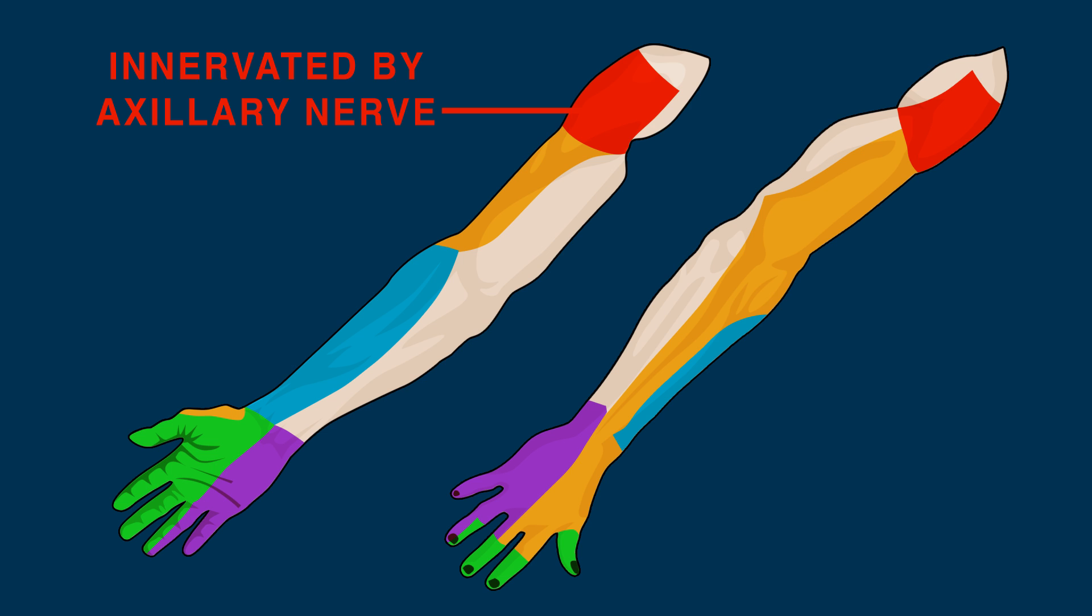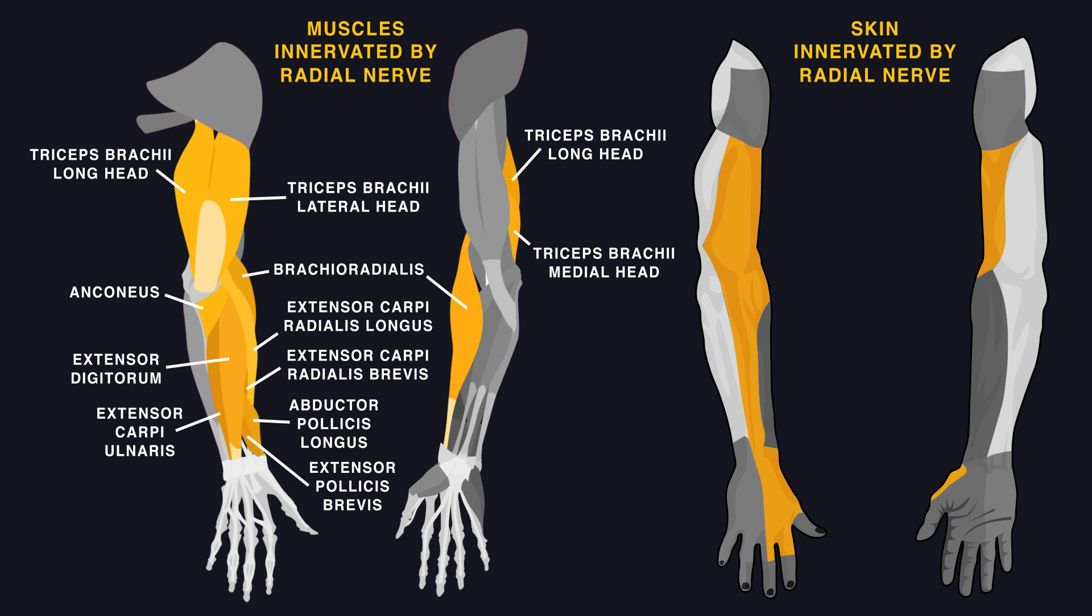It also gives feeling to the shoulder joint and the skin overtop the inferior part of the deltoid. The radial nerve supplies the posterior upper limb, innervating the triceps, muscles in the posterior forearm, the associated joints, and the overlying skin.